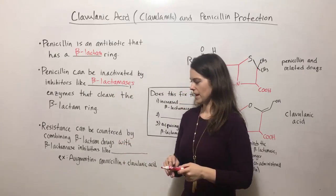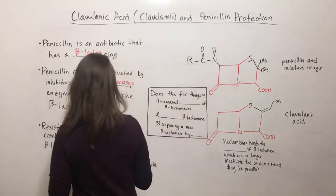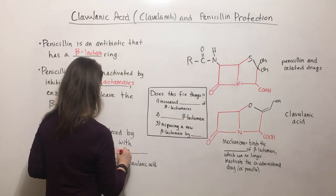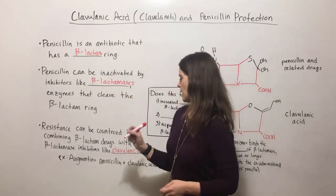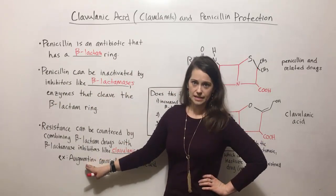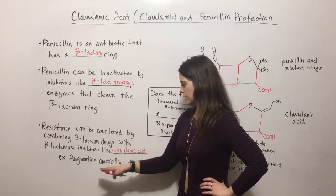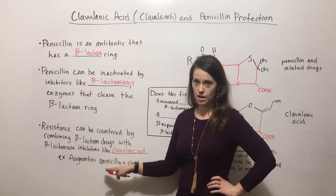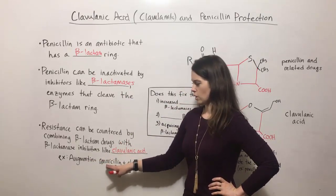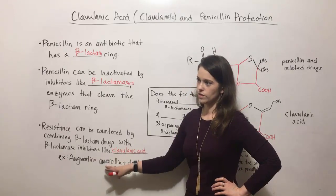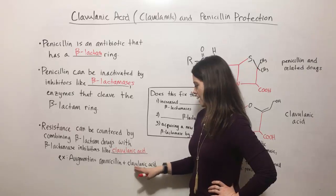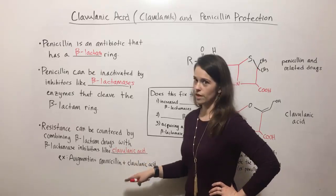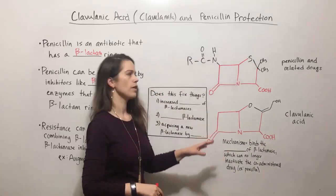An example of a beta-lactamase inhibitor is clavulanic acid, also known as clavulanate. An example is Augmentin. So if you've ever been prescribed Augmentin, you probably looked at the box and saw that it was a mixture of amoxicillin — one of these structurally related antibiotics with that beta-lactam ring — and clavulanic acid. The two are there together, so let's look at how they work.